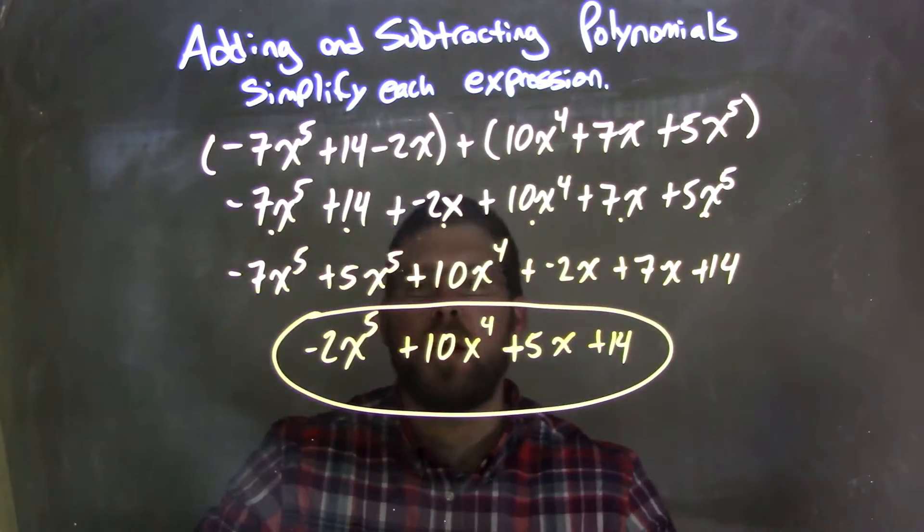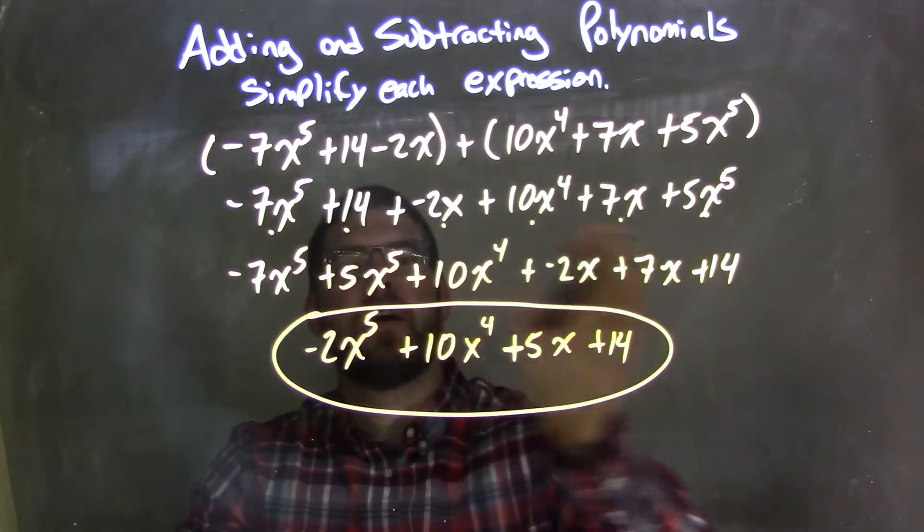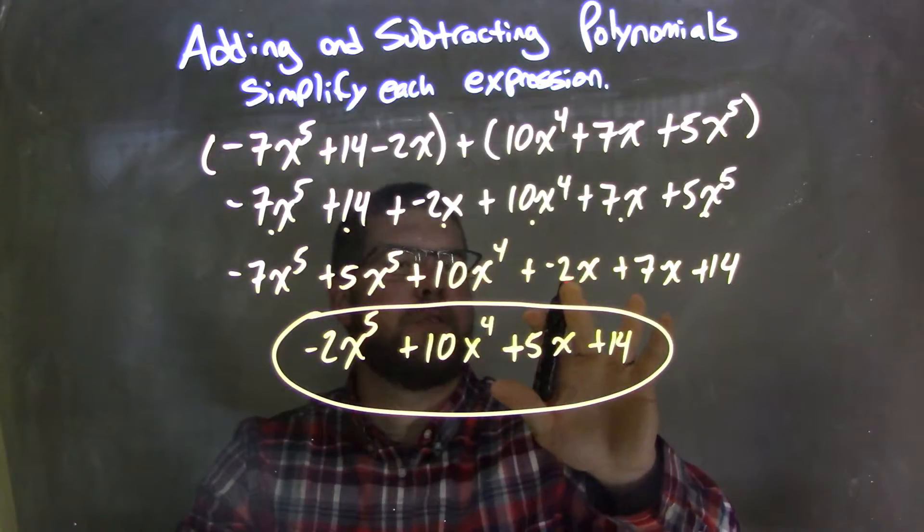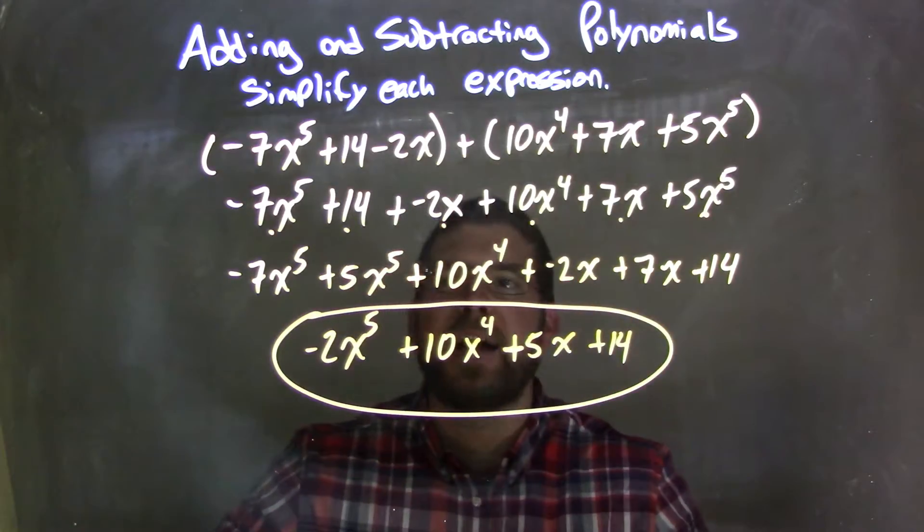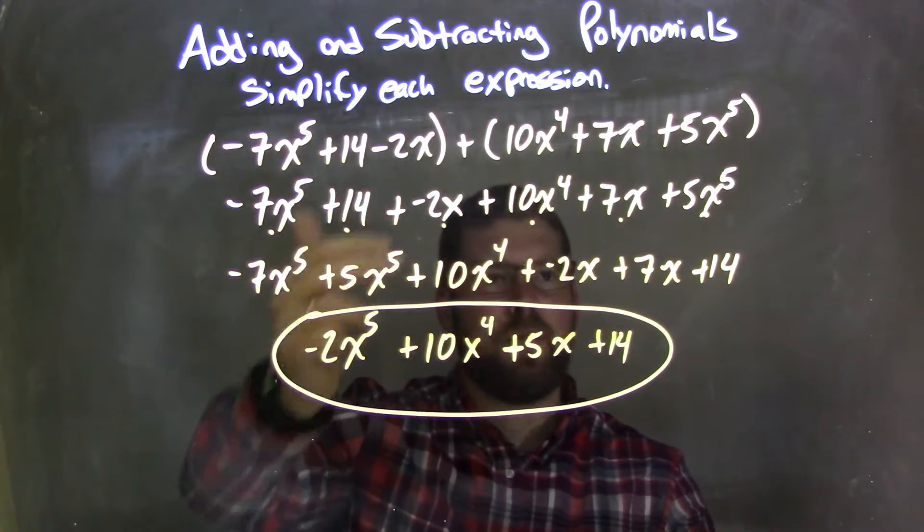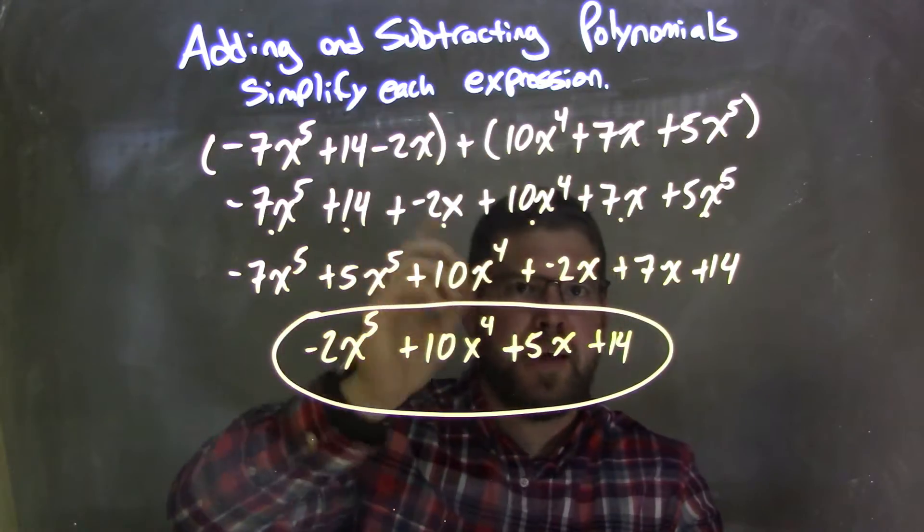Now I rearrange using the commutative property, highest degrees first: 5th power, 4th power, then 1st powers, and constants. I double check using the dot system to make sure I brought everything down. You need to make sure that happened.